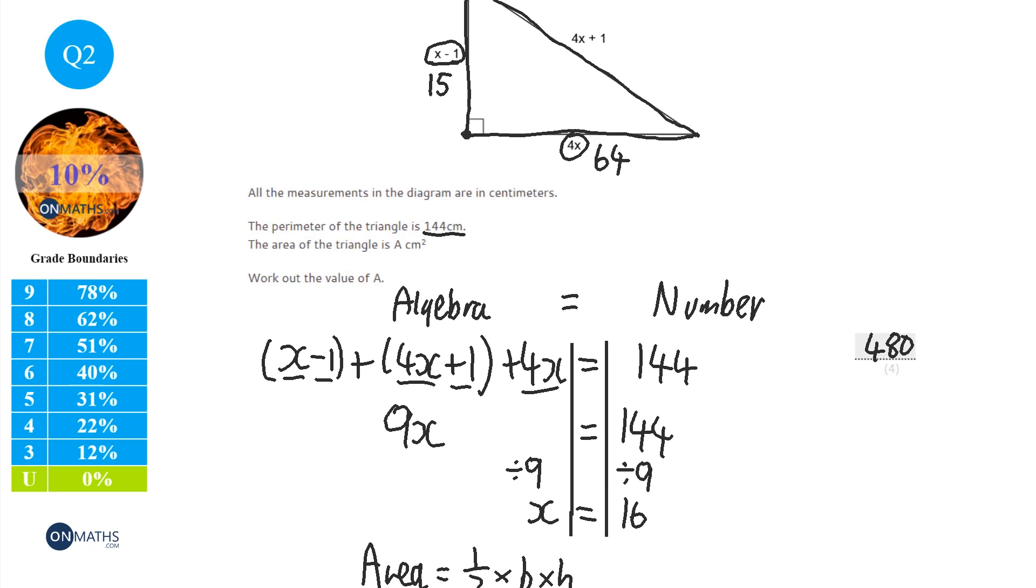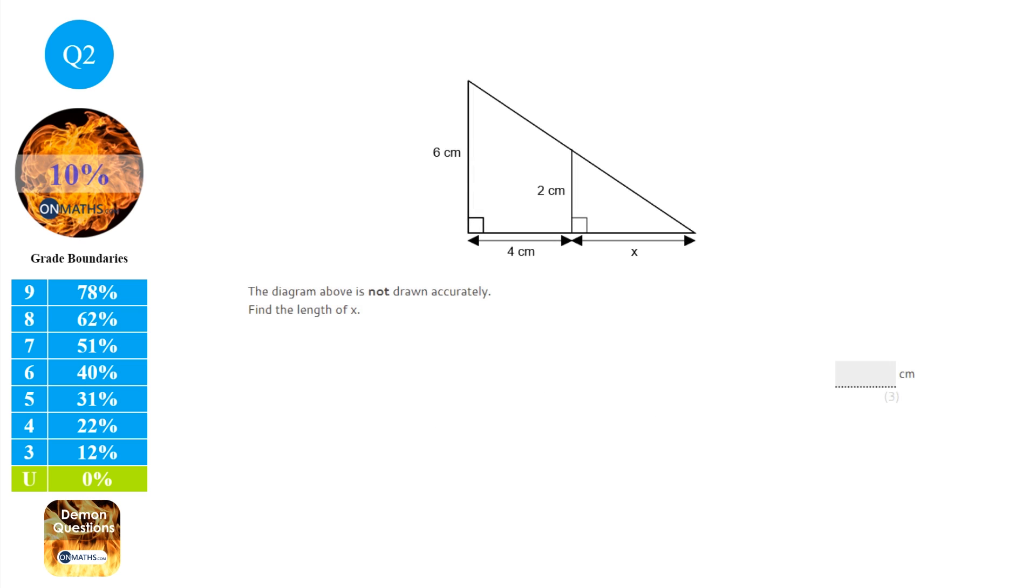Now, it says it's in centimetres. It says the perimeter is in centimetres, and it says work out what value of a is. Now, the value of a is the number before the units. So I don't have to put units on this. But you don't lose a mark if you put units on it as well, which would be centimetres squared.